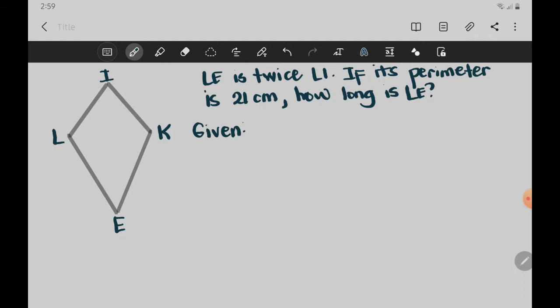So let us identify all the given in this problem. The given is we have the perimeter, which is 21 centimeters. And then since we don't know the given measure or value of LI, we can represent LI as X. And then LE is twice LI or double of LI. So if LI is X, we double it. So LE is 2X.